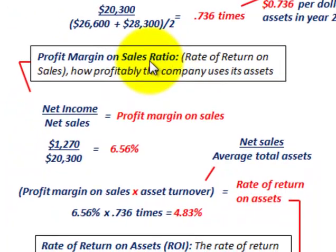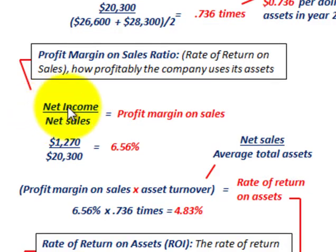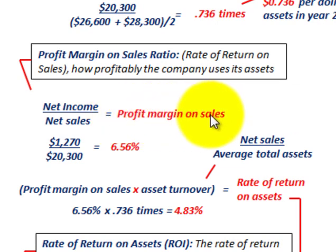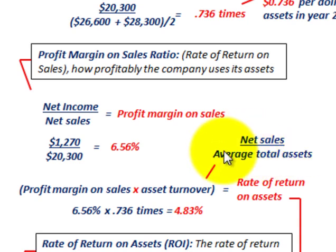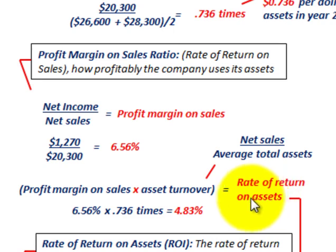Our profit margin on sales ratio is simply net income divided by net sales for the period. Then you can take that profit margin on sales times the asset turnover — which was net sales divided by average total assets — and that gives us our rate of return on assets.